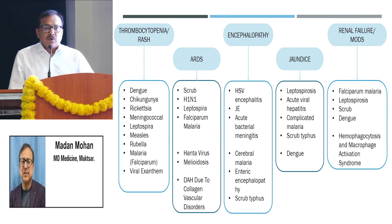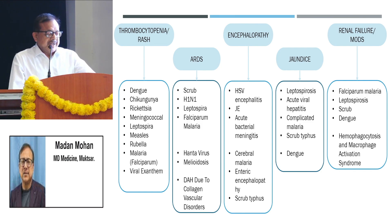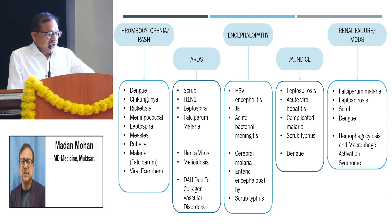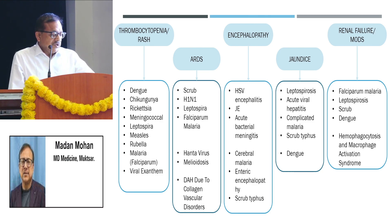The important causes of thrombocytopenia with rash are dengue, chikungunya, rickettsia, meningococcal infection, leptospirosis, measles, rubella, and falciparum malaria.